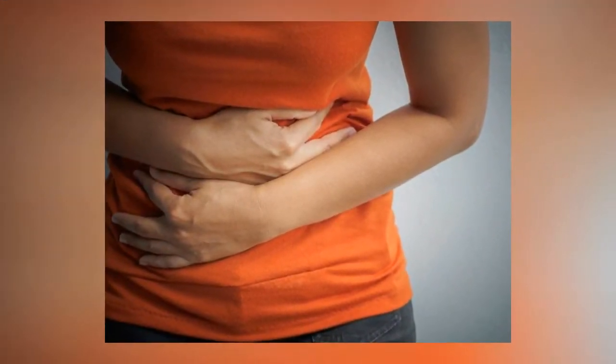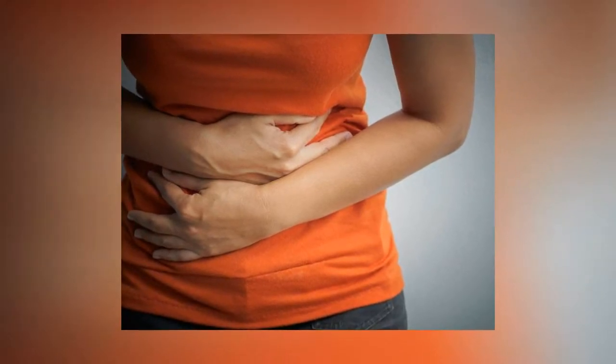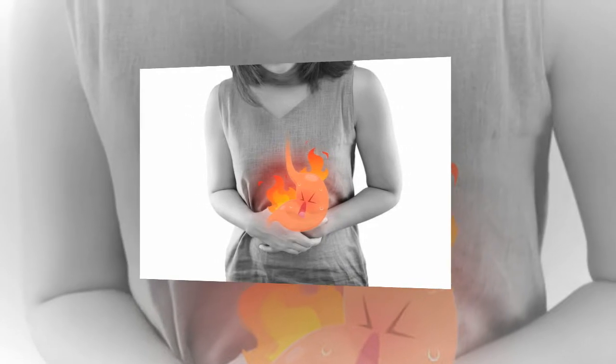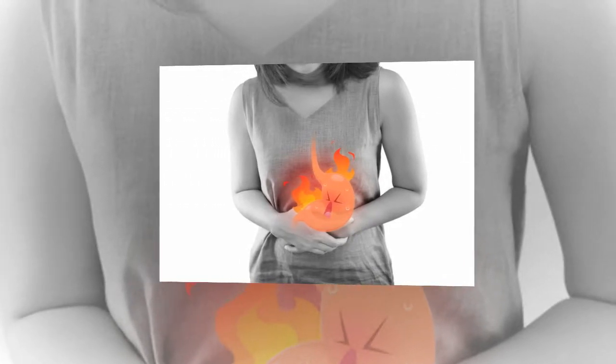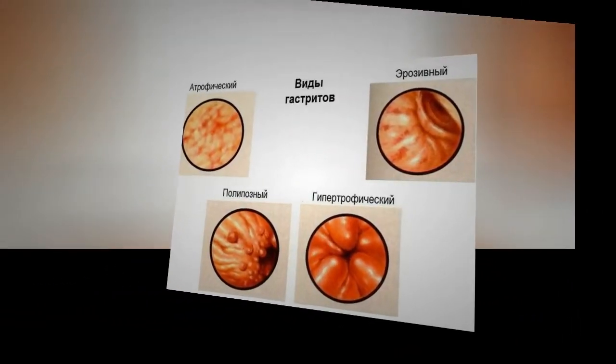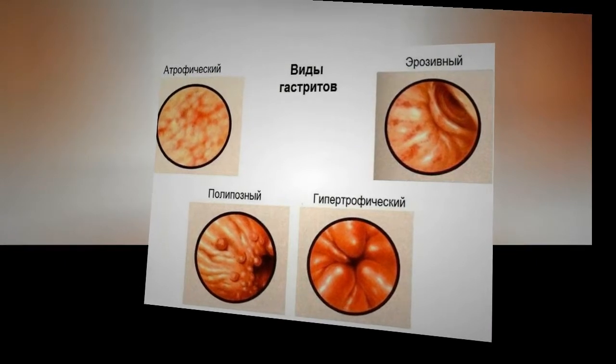If the gastritis is caused by pernicious anemia, B12 vitamin shots will be given. Eliminating irritating foods from your diet, such as lactose from dairy or gluten from wheat, can also help. Once the underlying problem disappears, the gastritis usually does too. You should talk to your doctor before stopping any medicine or starting any gastritis treatment on your own.